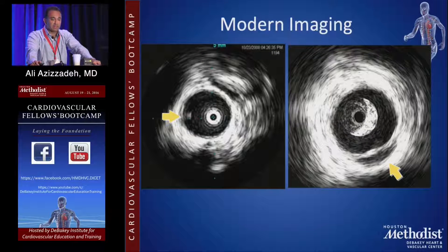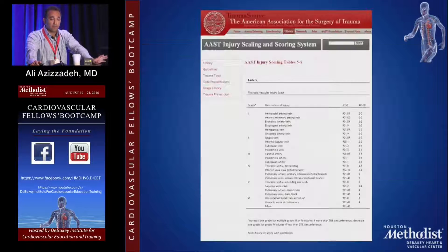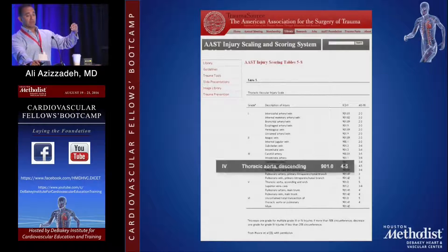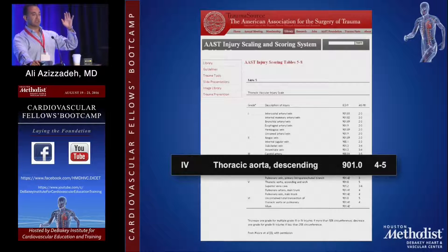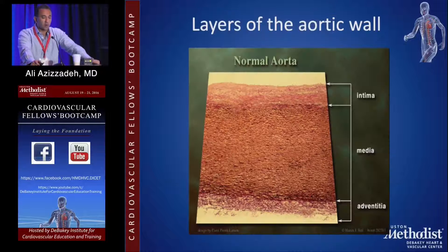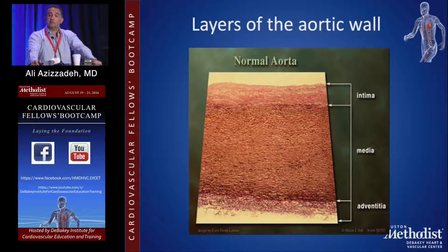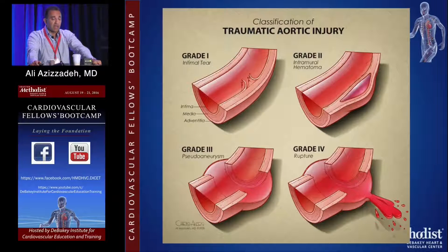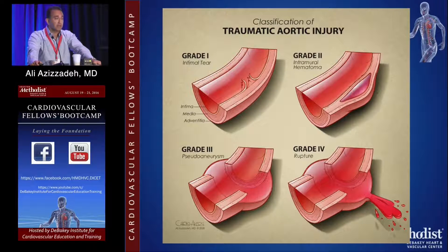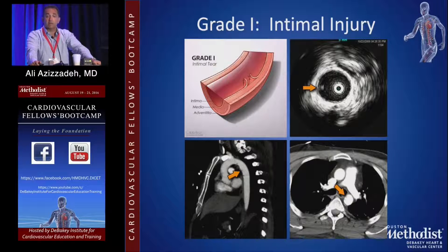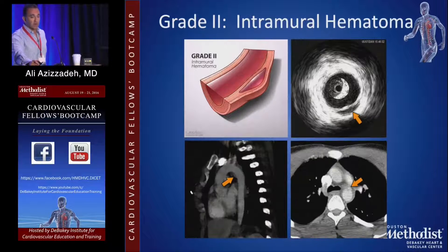We were seeing injuries that hadn't been seen before. Looking at the American Association for the Surgery of Trauma grading system at that time, descending thoracic aortic injury was simply a grade four — there was no range or spectrum. So we proposed a classification based on the layers of the aorta — intima, media, and adventitia. Intimal tears are grade one, intramural hematomas are grade two, pseudoaneurysms grade three, and ruptures grade four.